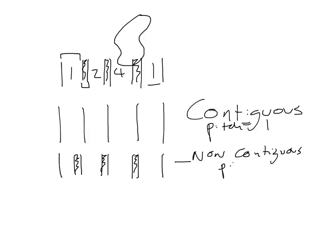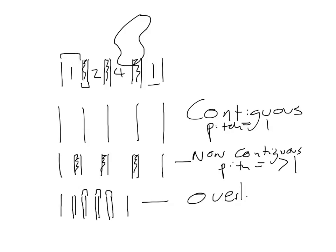So contiguous is a pitch equal to one; non-contiguous is a pitch greater than one. If we drop pitch below one, we get overlapping slices — slices that overlap each other with overlap regions throughout. Overlapping corresponds to a pitch less than one.